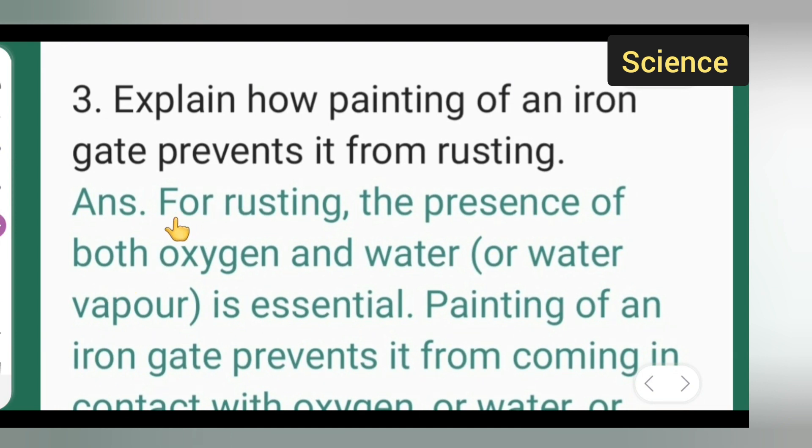Now you can take down the answer. For rusting, the presence of both oxygen and water, or water vapor, is essential.